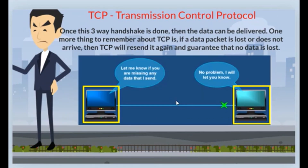Once this three-way handshake is done, the data can be delivered. One more thing to remember about TCP is, if a data packet is lost or does not arrive, then TCP will resend it again and guarantee that no data is lost.